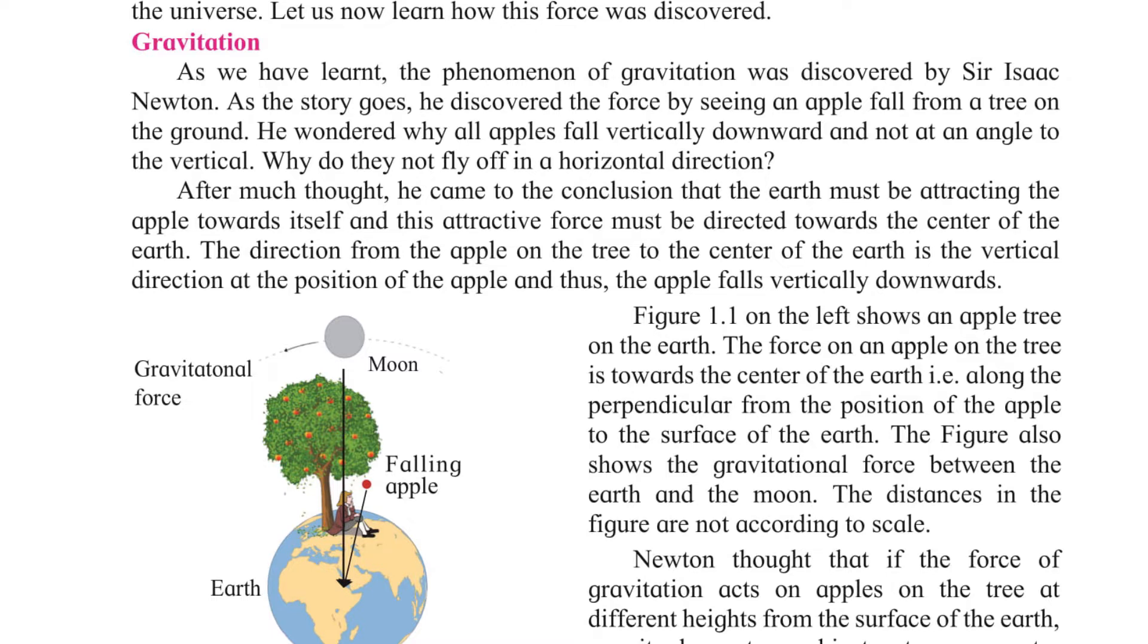The direction from the apple on the tree to the center of the earth is the vertical direction at the position of the apple, and thus the apple falls vertically downwards. The figure shows the gravitational force between the earth and the moon. The distances in the figure are not according to scale.